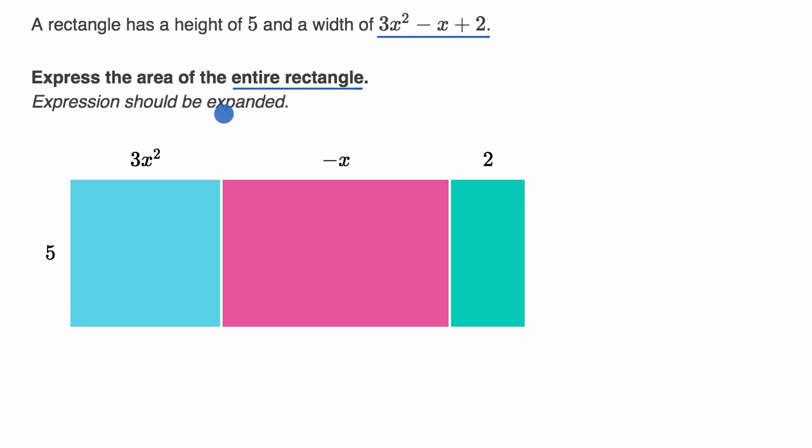Alright, now let's work through this together. And what this diagram is showing us is exactly an indicative rectangle where its height is 5 and its width is 3x² - x + 2. And what this shows us is that the area of the entire rectangle can be broken down into three smaller areas.